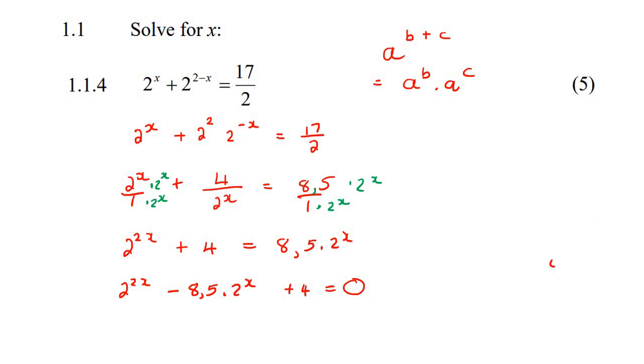What is a trinomial actually? A trinomial is whenever this exponent is double this exponent. Can you see that? Whenever this one is double this one, then it's a trinomial.